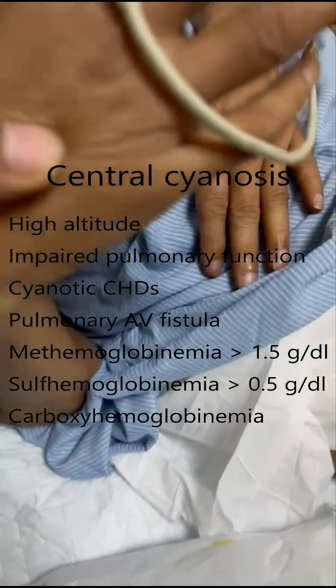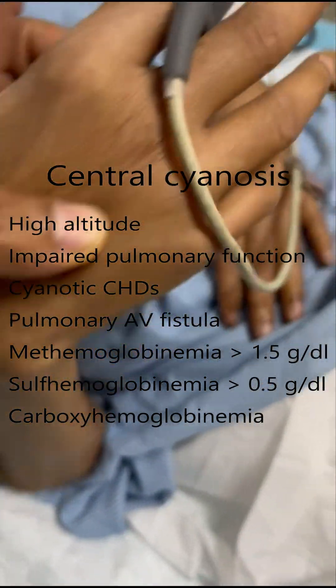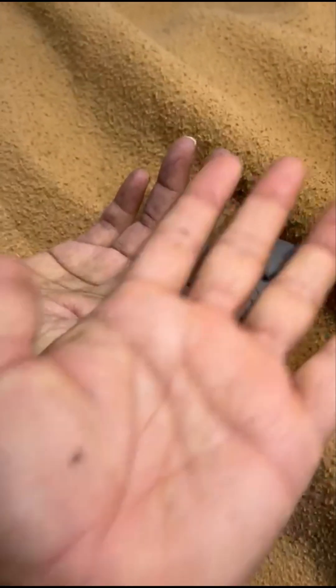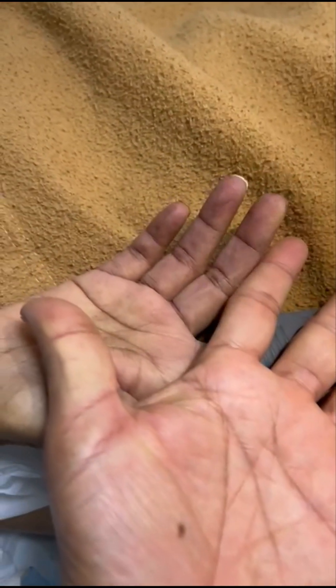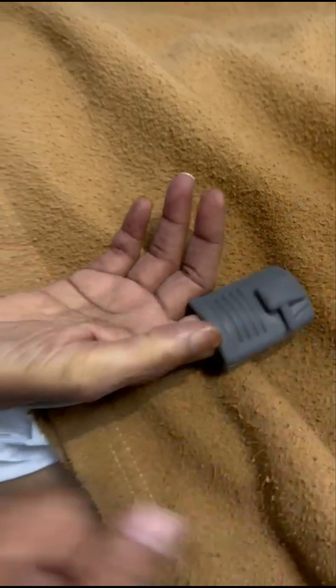Central cyanosis can also occur if the patient has some abnormal hemoglobin in the body, like methemoglobinemia. When the concentration of methemoglobin goes more than 1.5 grams per deciliter, it leads to central cyanosis. Note that some drugs like nitrates, nitrites, and sulfonamides can cause methemoglobinemia.